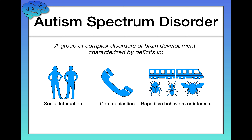ASD is also characterized by very fixated interests, like trains or insects, depending on the child. We're going to talk more about autism later when we get to psychological disorders. What I will talk about now is a little bit of the history of how we treated and helped children with autism.